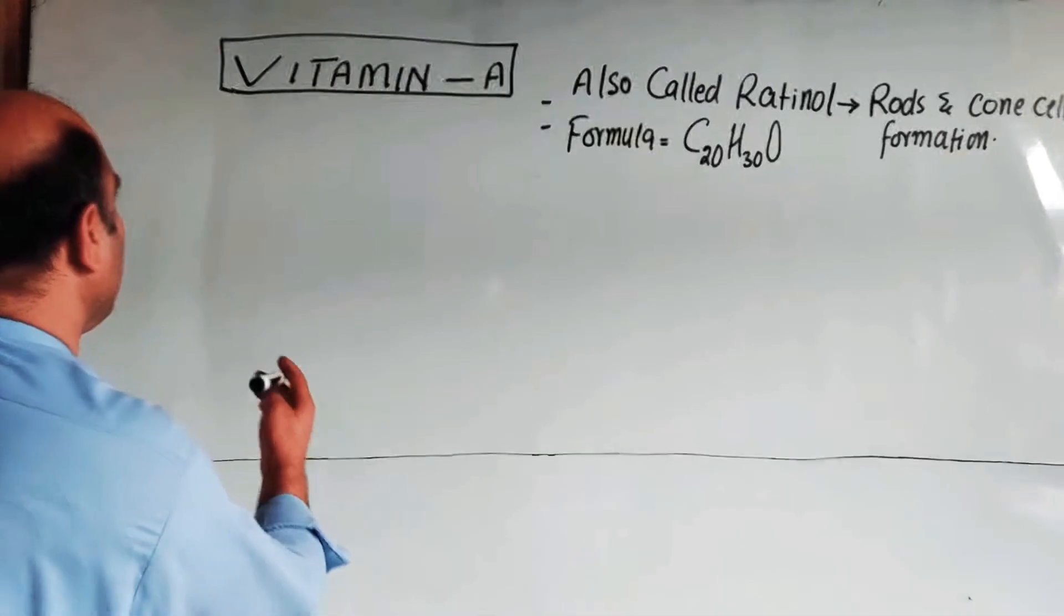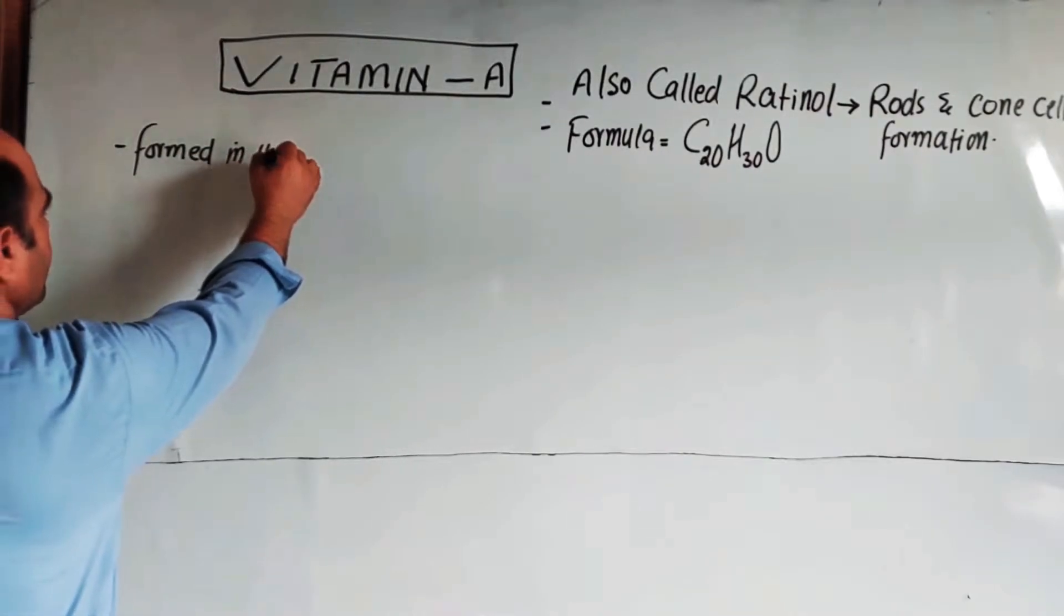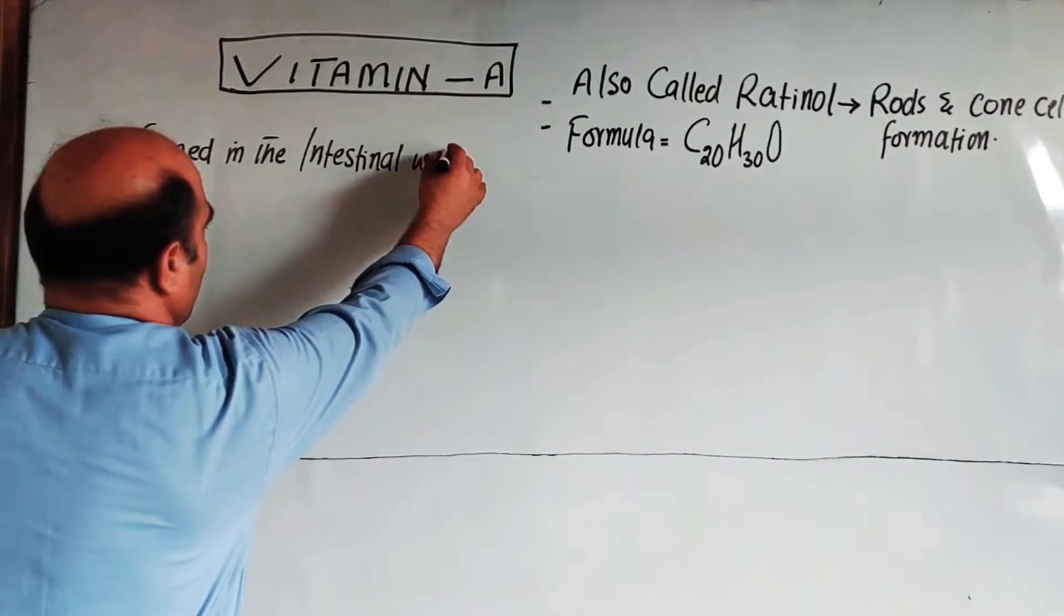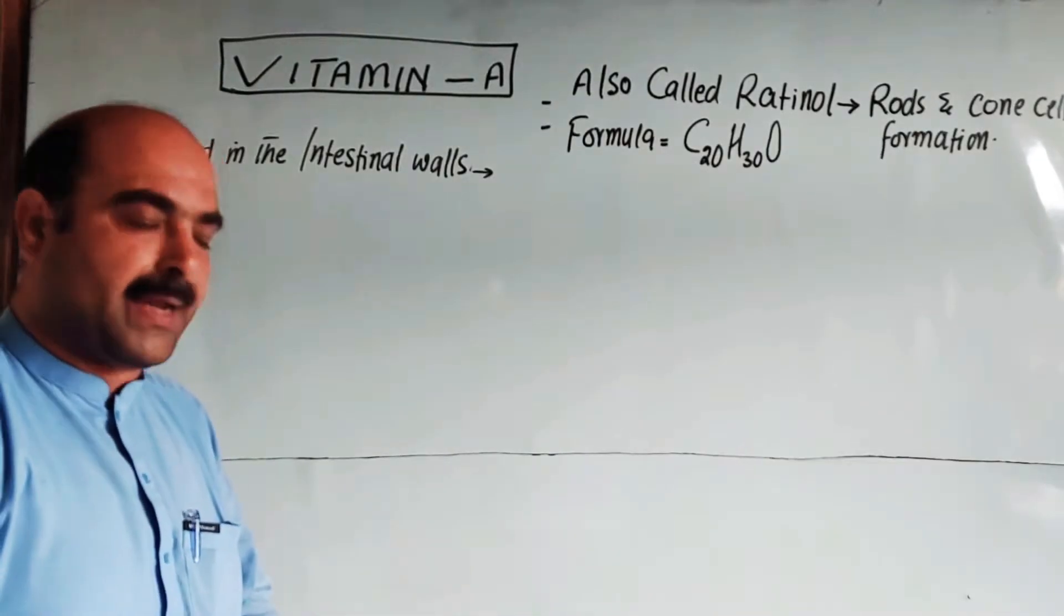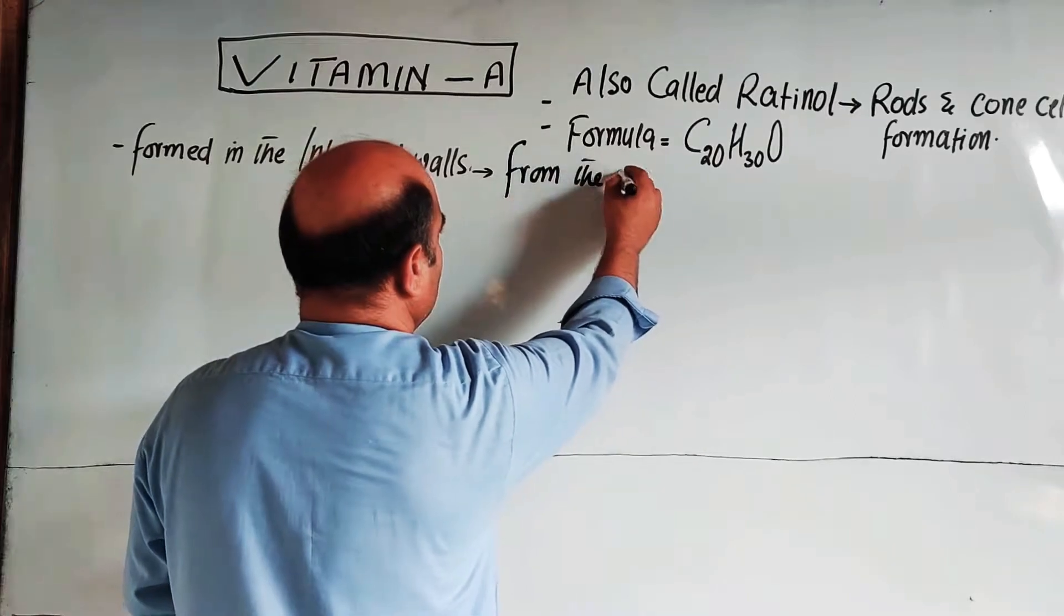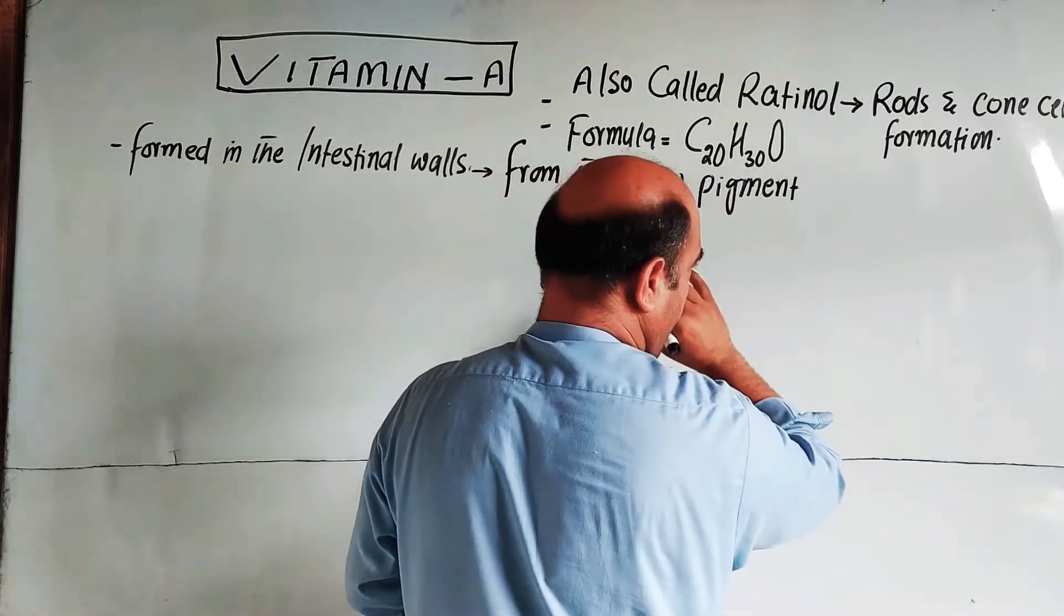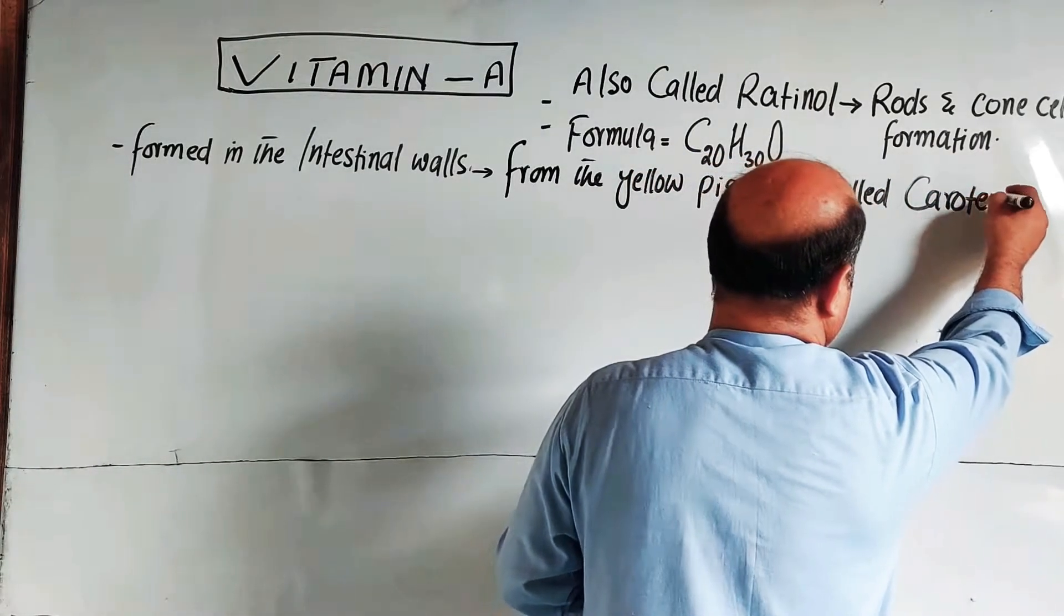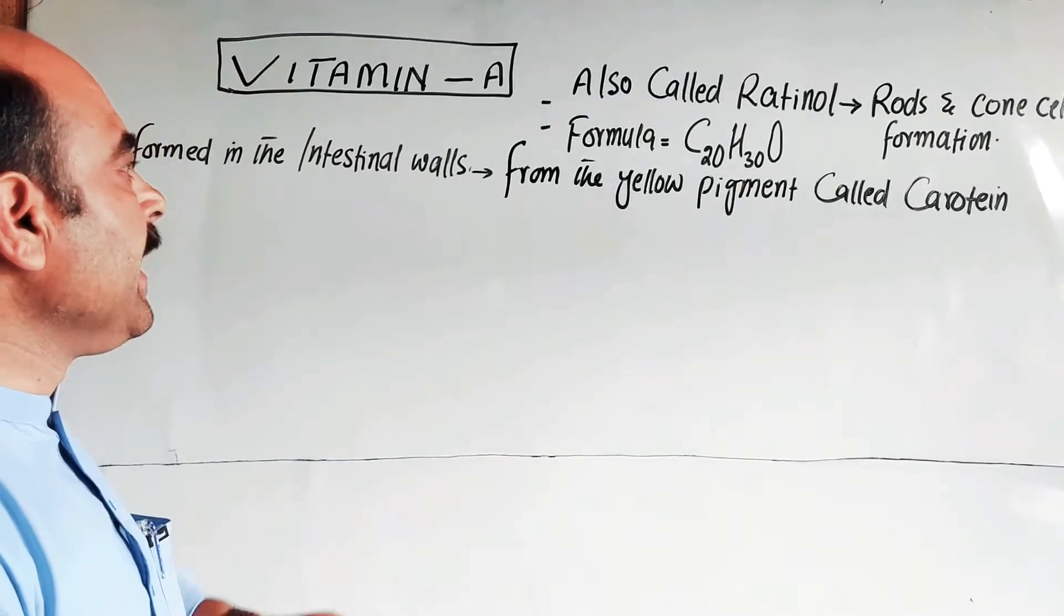These are formed in the intestinal walls from the yellow pigment carotene.